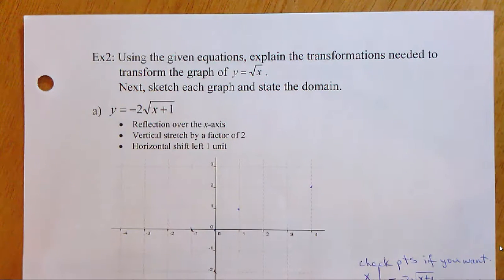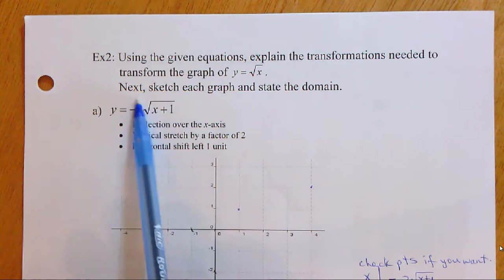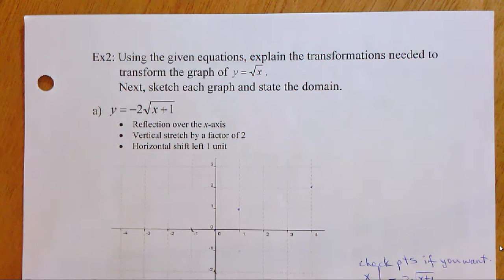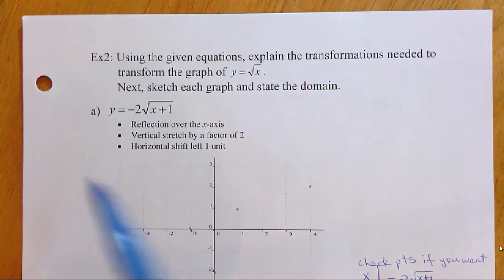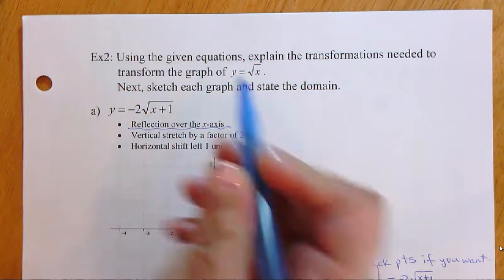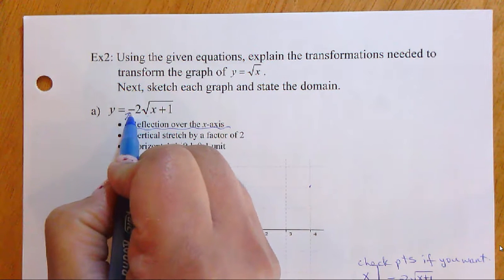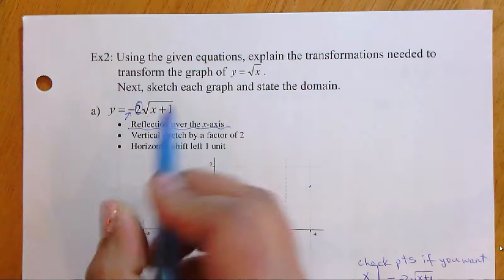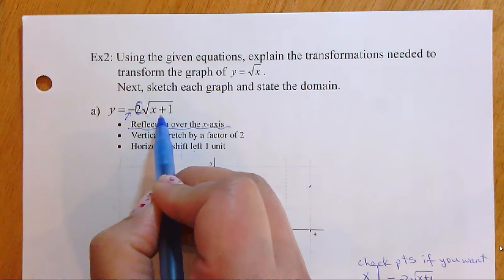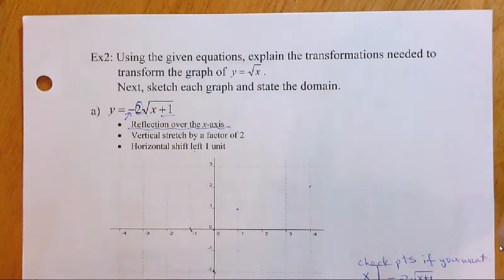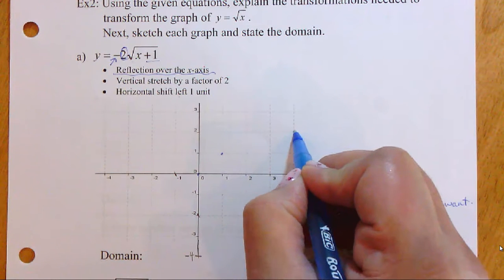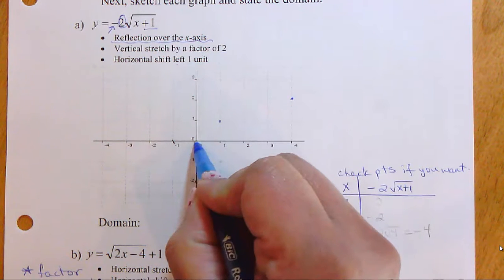In this example, we use the given equations to explain the transformations needed to transform y equals square root of x, then sketch each graph and state the domain. There is a reflection over the x-axis caused by the negative sign, a vertical stretch by a factor of two caused by the coefficient two, and a horizontal shift left one unit caused by the plus one inside the radical. Our parent function points start at zero-zero, one-one, and four-two.